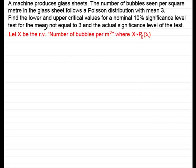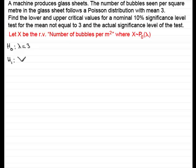First, we define a random variable. Let X be the number of bubbles per square meter, where X is distributed as a Poisson distribution with mean lambda. The null hypothesis H0 is that lambda equals 3. Because we need to find lower and upper critical values, we have a two-tailed test, meaning we're testing lambda not equal to 3. When you have 'not equal to', that means you have a two-tailed test.